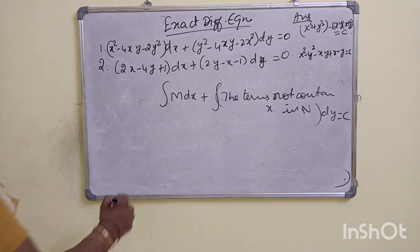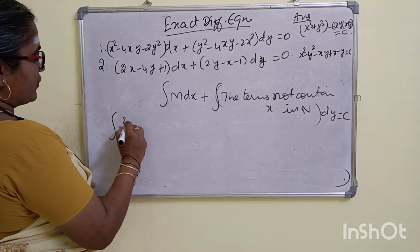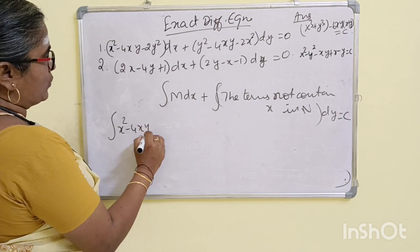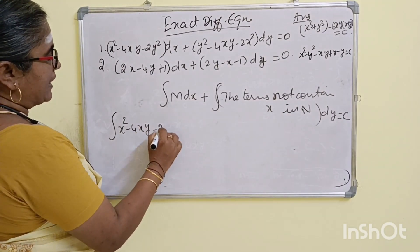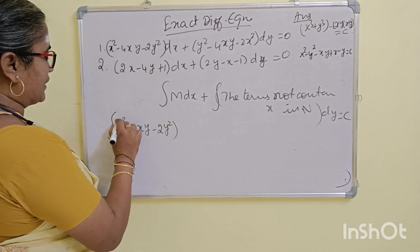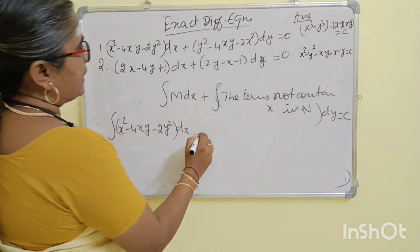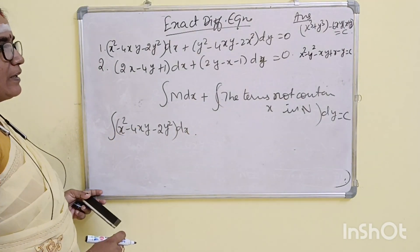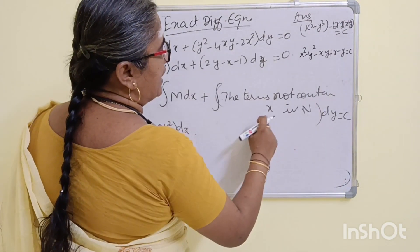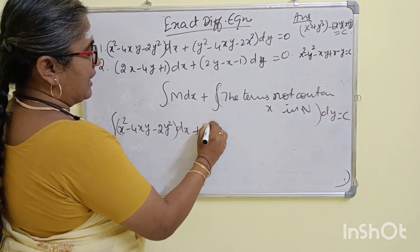M dx: x squared minus 4xy minus 2y squared, into dx. The terms not containing x in N.